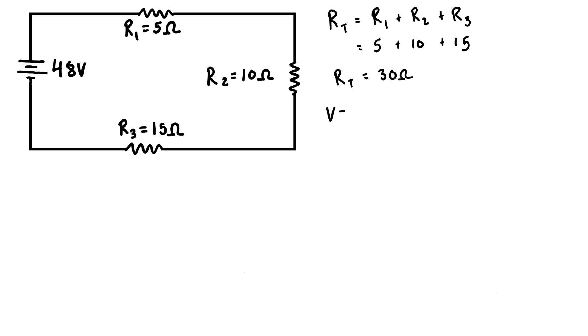Next, we use Ohm's Law — V equals IR — rearranged for current: I equals V over R. Our source voltage is 48 volts divided by our total resistance of 30 ohms, giving a total current of 1.6 amps. Because this is a series circuit, that 1.6 amps flows through the battery, the first resistor, the second resistor, and the third resistor — current is the same everywhere.